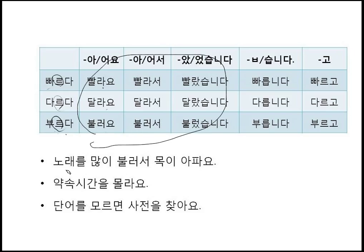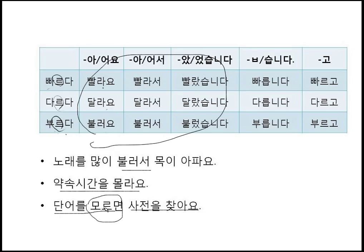Example sentences: 노래를 많이 불러서 목이 아파요 — I sang a lot so my throat is painful. 약속 시간을 몰라요 — I don't know the appointment time. 단어를 모르면 사전을 찾아요 — If I don't know the word, I look it up in the dictionary. Note: the conditional form is 모르면, not 몰라면, because 면 attaches directly to the stem 모르.